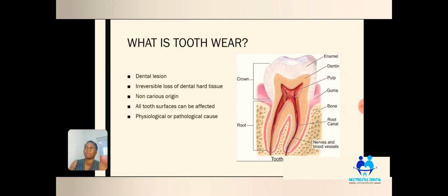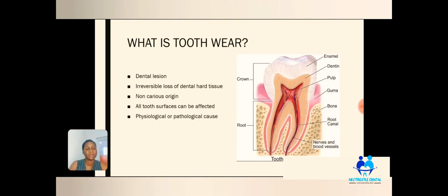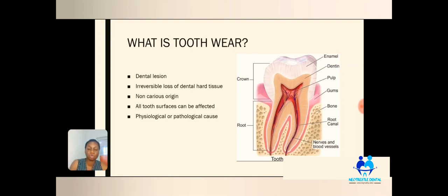We divide the causes of tooth wear into two major parts: the physiological cause and the pathological cause. When we talk about physiological causes, for example, we use our teeth to grind our food every single day. You can imagine using these teeth to grind daily, and as you're growing older, you'll see there will always be an amount of tooth wear on the surface of the tooth. That's physiological.